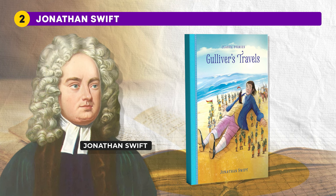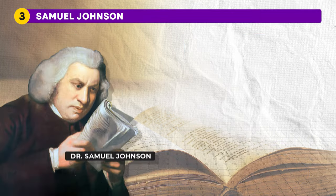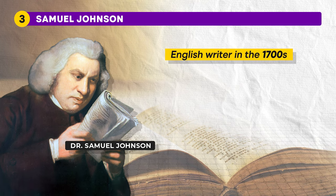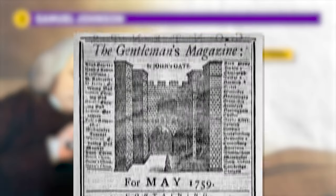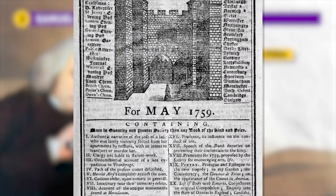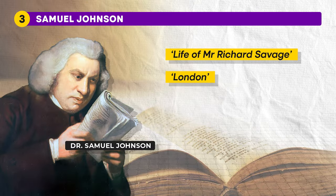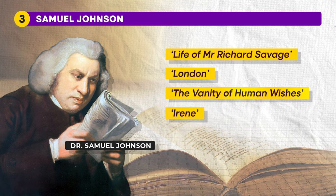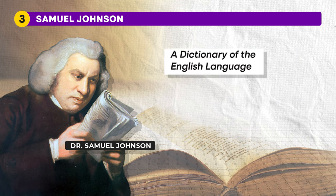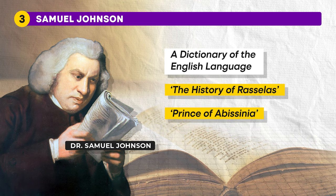As we move from the Augustan Age to the Age of Johnson or the Age of Sensibility, we have Samuel Johnson. He was a very important English writer in the 1700s who wrote poetry and was also a lexicographer. He translated, wrote essays and articles, travel stories and biographies. He began writing for The Gentleman's Magazine and his early works include Life of Mr. Richard Savage, the poems London and The Vanity of Human Wishes, and the play Irene. He also wrote A Dictionary of the English Language in 1755. His later works include essays, The History of Rasselas, Prince of Abyssinia, among others.